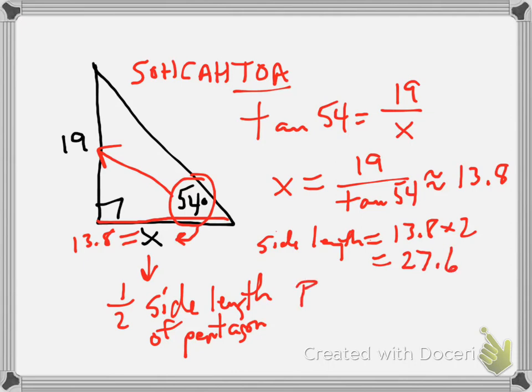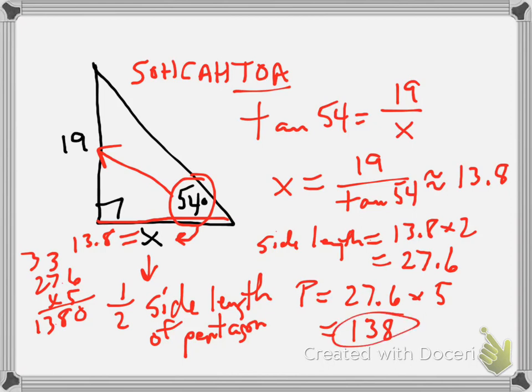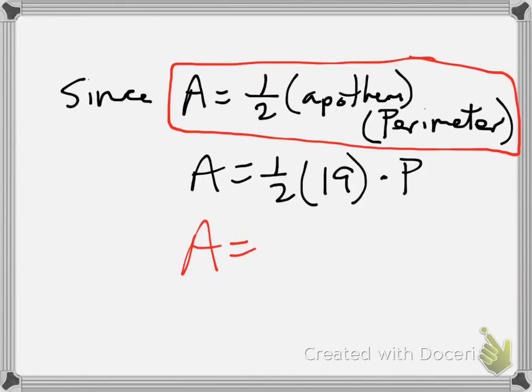Now the perimeter is 27.6 times 5 because there's five sides. We'll do it old school—that gives us 138. So the perimeter is 138. Now let's go back, we know what P is: one half times 19 times 138.